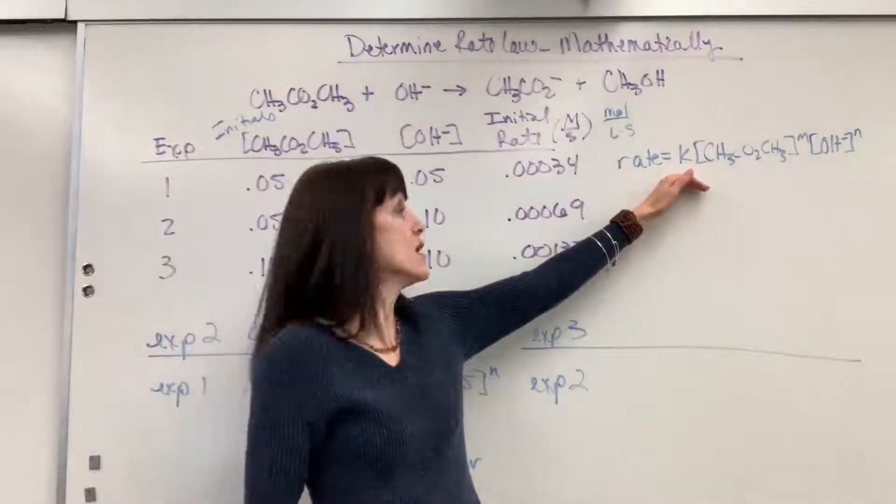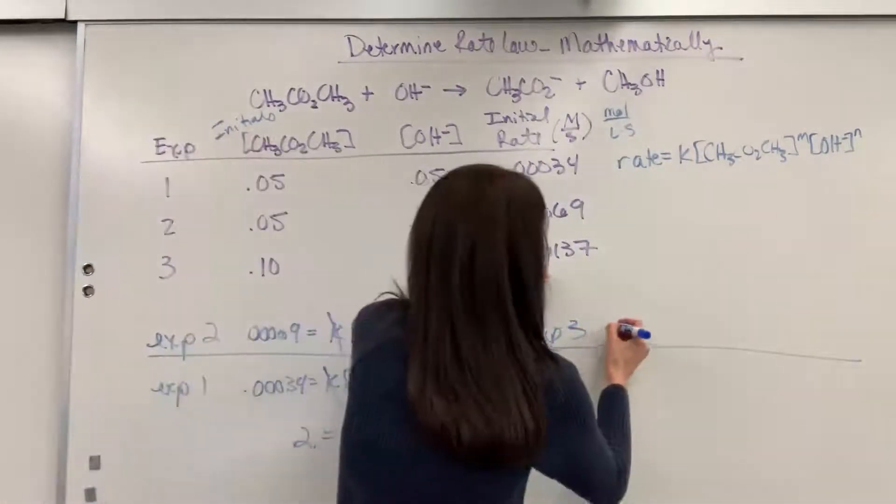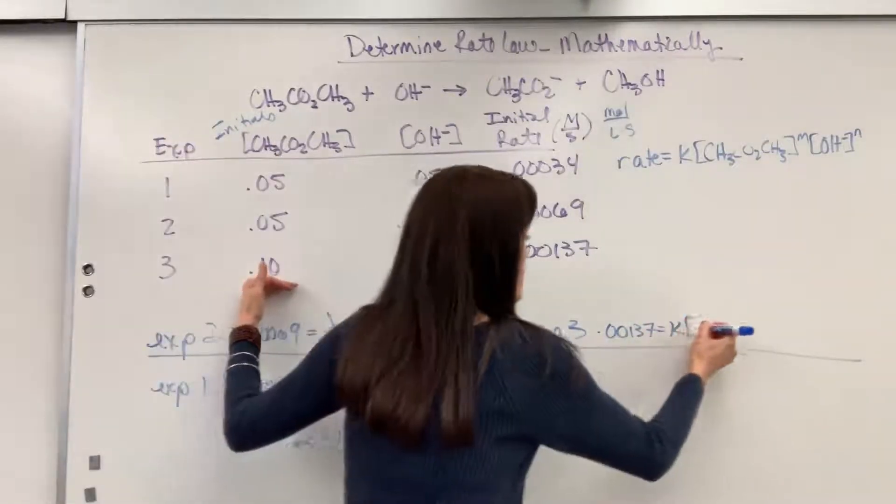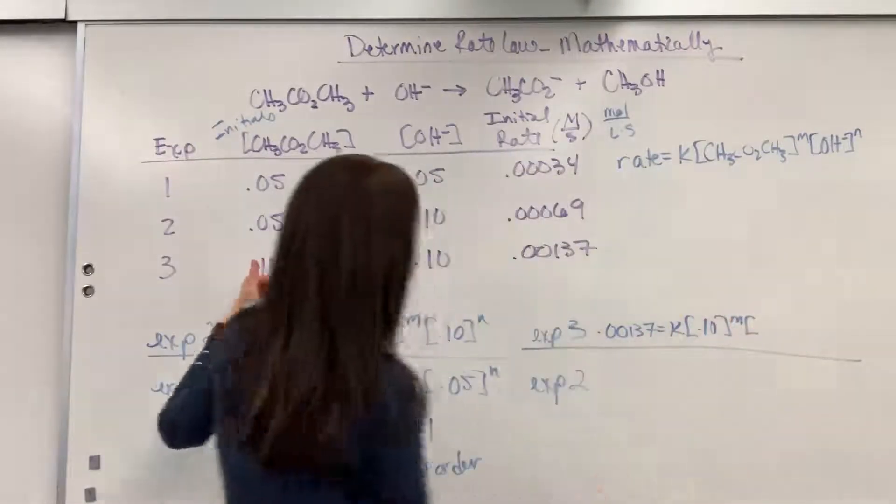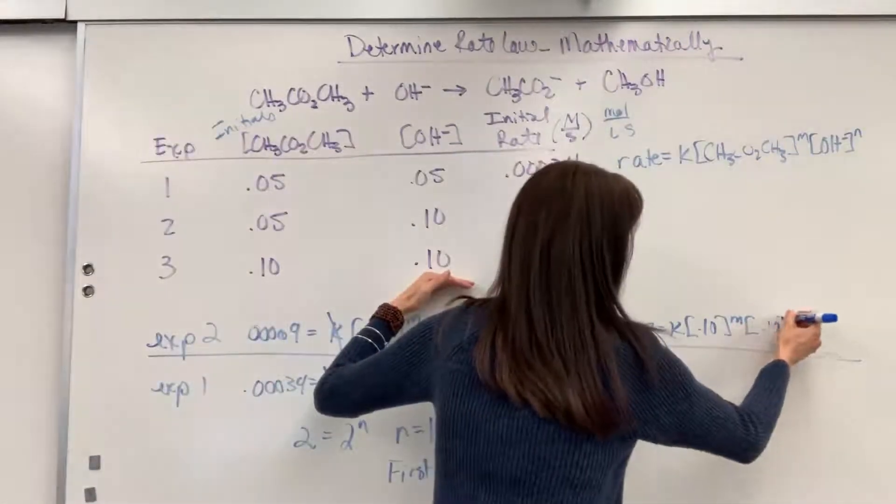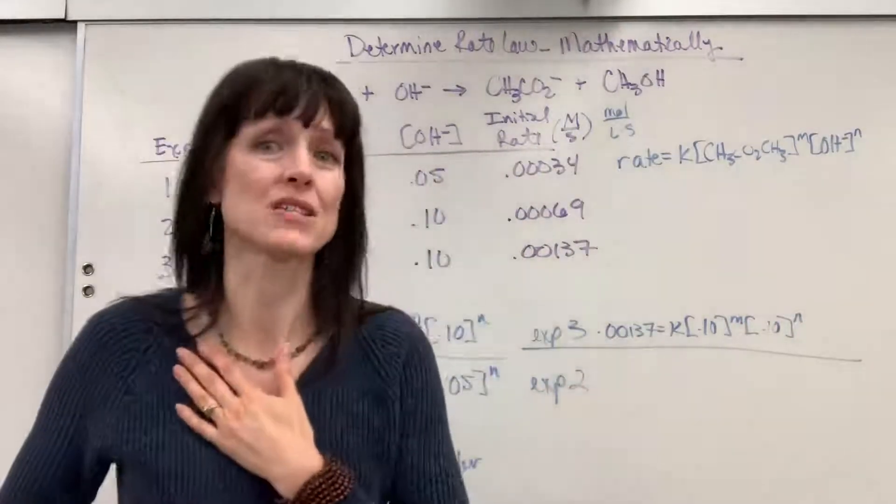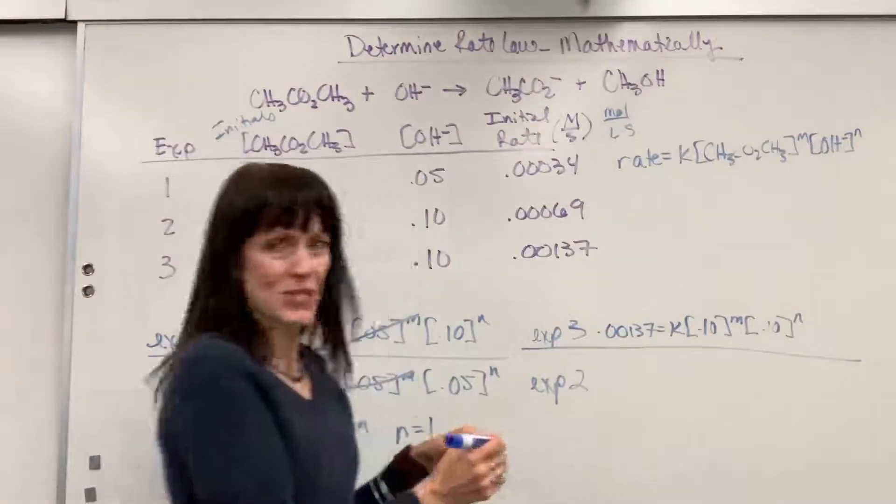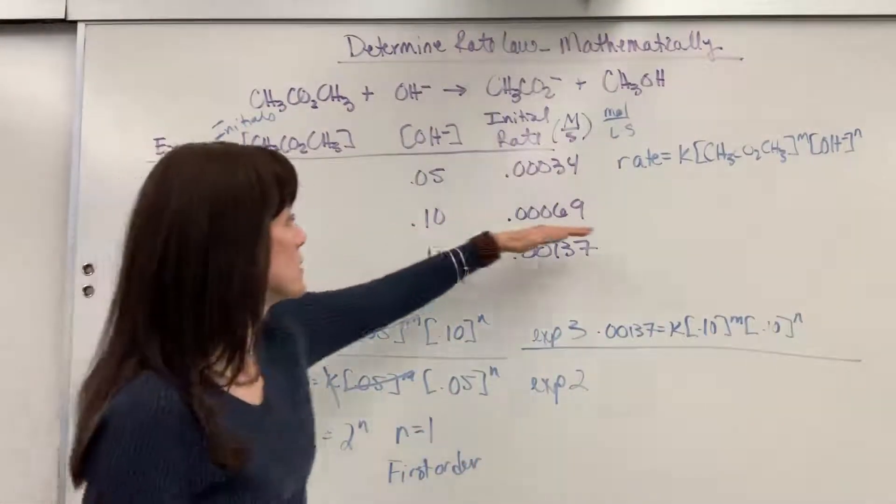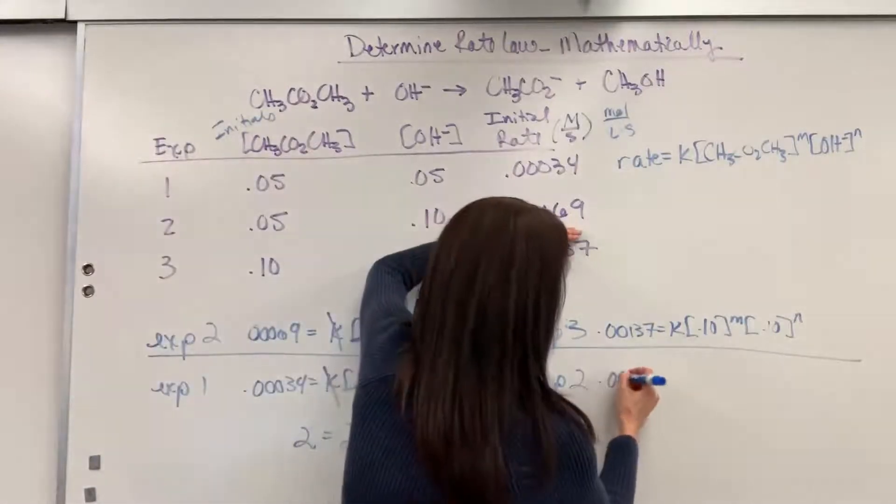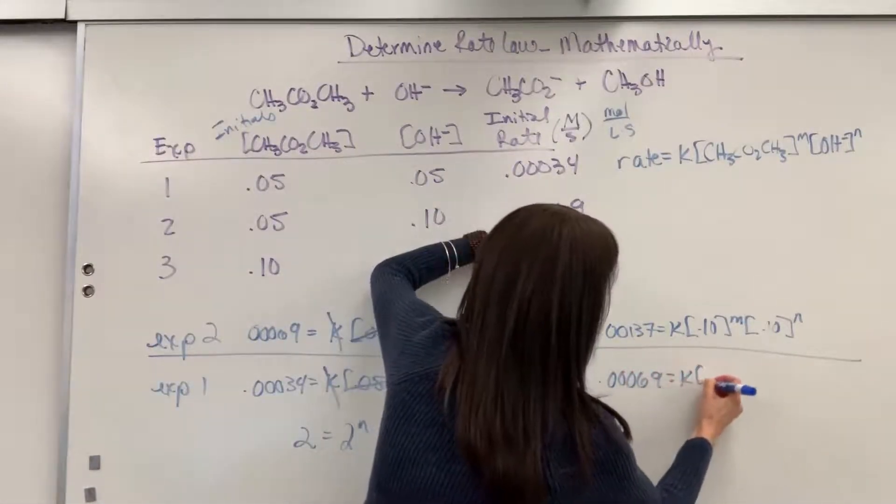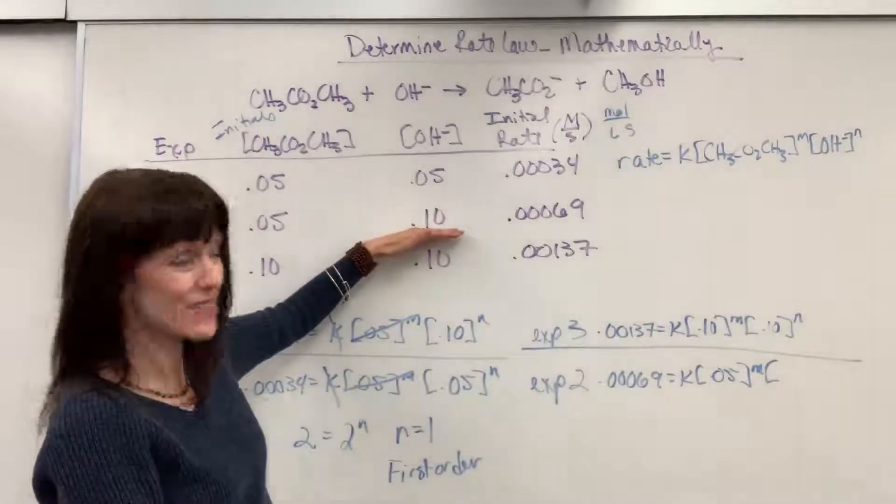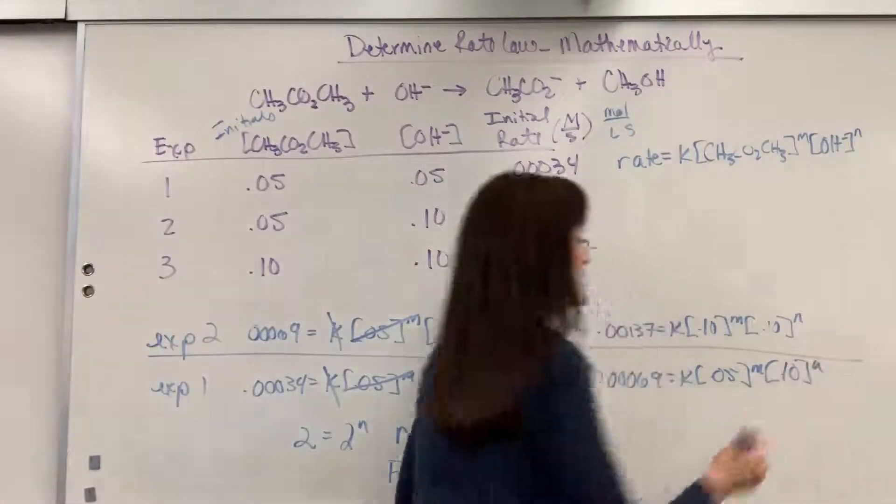And I'm just going to plug it into this rate law. So again, the rate for experiment three, 0.00137 equals K times the concentration of the methyl acetate, 0.10 raised to the M times 0.10. That's my hydroxide raised to the N. Now I know what N is. It's a first order. It's a one. I could put one there or N. Doesn't matter because it's going to cancel out. Experiment two, the rate law for experiment two. My initial rate, that is going to be 0.00069 equals K times concentration 0.05 to the M times the concentration of hydroxide right there, 0.10 to the N.